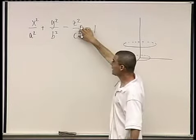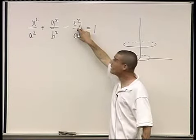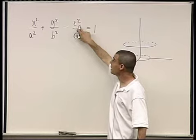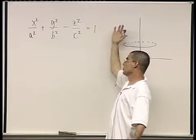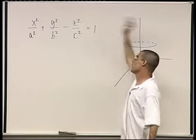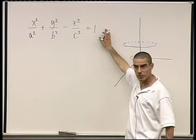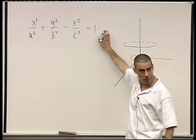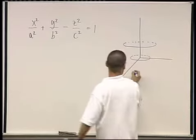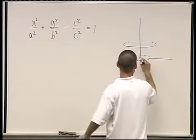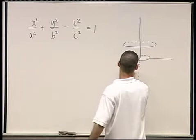The same happens when you plug in negative numbers for z. If you plug in −1, squaring it gives 1, the minus moves over, and you get 1 plus some constant — again an ellipse in x and y. So going downward we get ellipses as well.